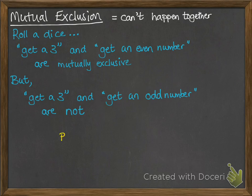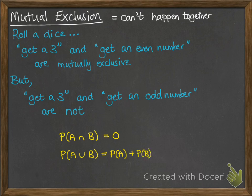If things are mutually exclusive, it means the probability of both of those things happening together — the intersection of A and B — will be 0; it's not possible. This also means that the probability of A or B, the union of A and B, is simply the two things added together. Because they're completely separate with no overlap, we just add up the two probabilities to find the probability of one or the other happening.